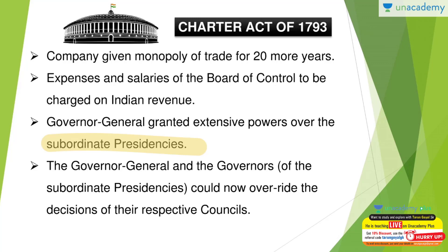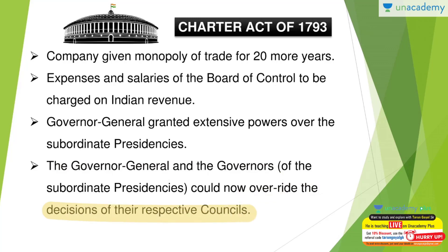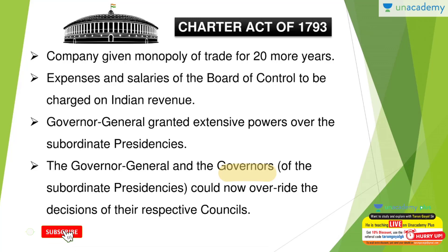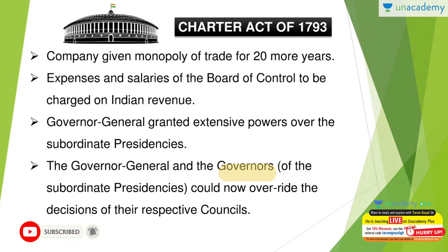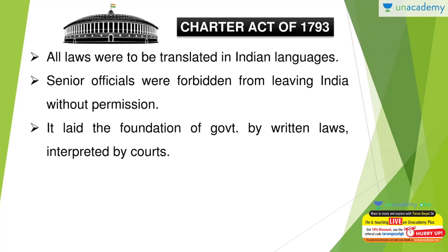The Governor General and the Governors of the Presidencies could now override the decisions of their respective executive councils under special circumstances. So powers were enhanced for both the Governor General and Governors. One more point to add: a minimum of 12 years' experience in India was required to become a member of the executive council — whether the Governor General's executive council or the presidencies' executive councils.